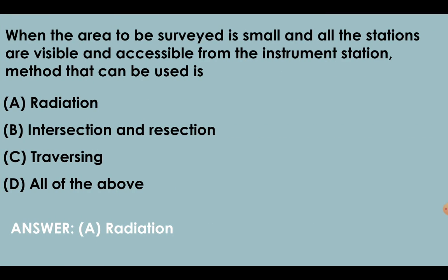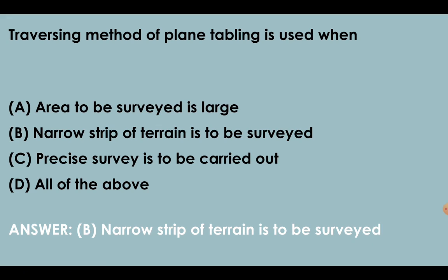When the area to be surveyed is small and all the stations are visible and accessible from the instrumentation, method that can be used is radiation method. Traversing method of plane tabling is used when narrow strip of terrain is to be surveyed.